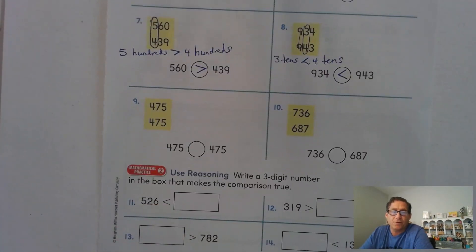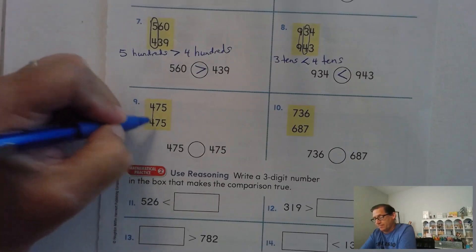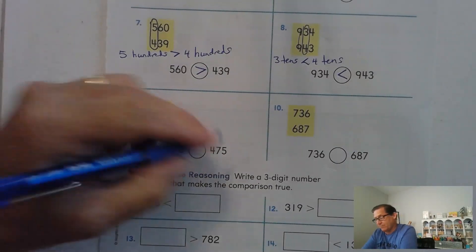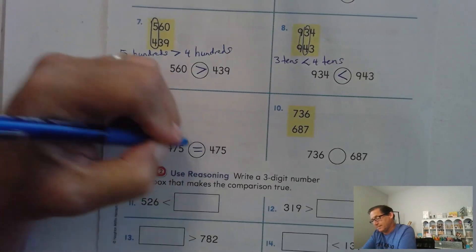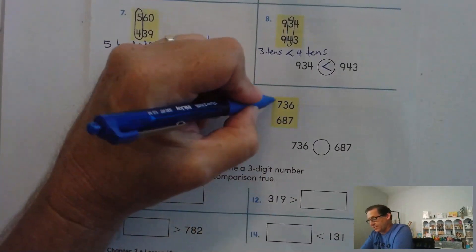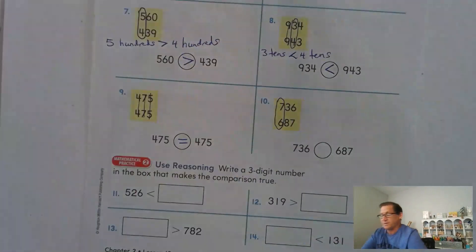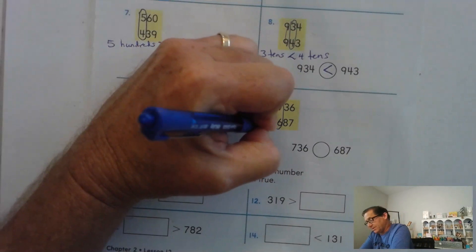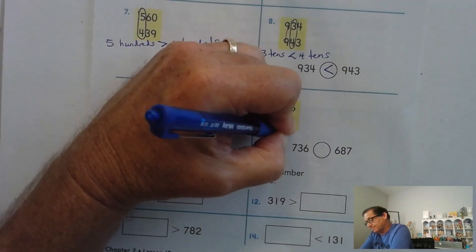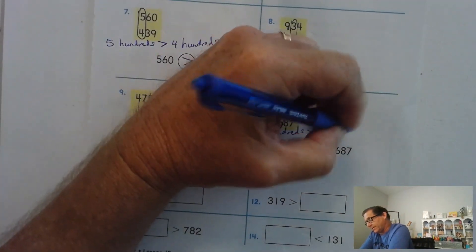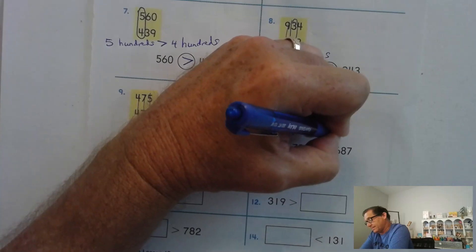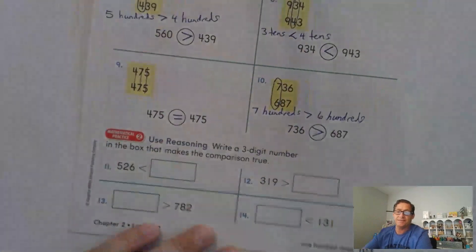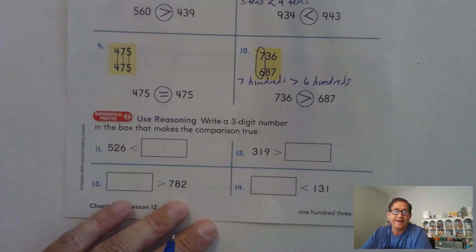475, 475. 4 hundreds, 7 tens, 7 tens, 5 ones. They are equal. 736 compared to 687. 7 hundreds is greater than 6 hundreds. So 736 is greater than 687.